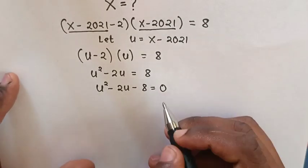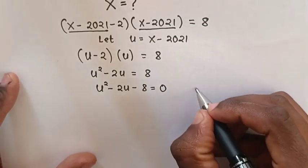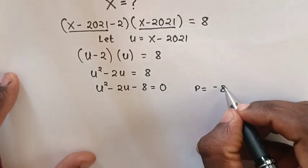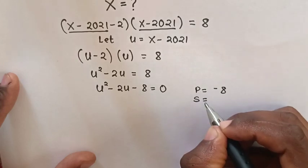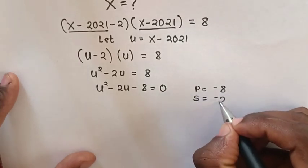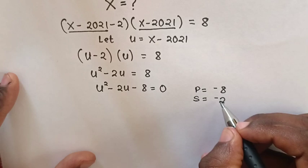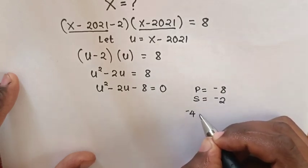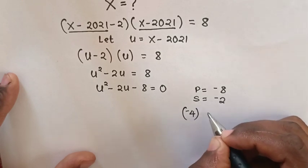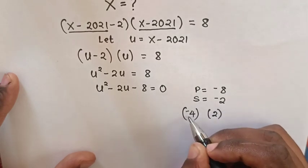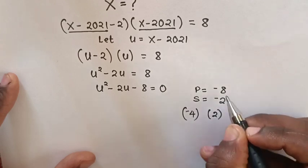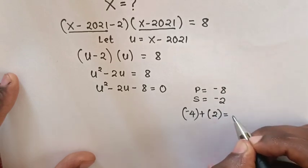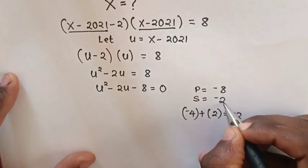Next, to solve this quadratic equation by factorization, the product is 1 times negative 8 equals negative 8, and the sum is negative 2. When we multiply, we get negative 8, and the sum of negative 4 and 2 is negative 2, which matches.